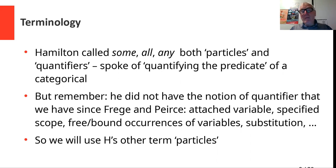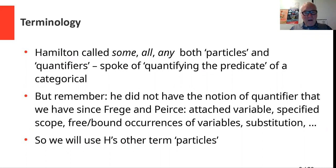Regarding terminology: Hamilton called some, all, and any 'particles,' and he also called them quantifiers. He must have invented the term 'quantifying the predicate' of a categorical proposition. But we have to keep in mind that Hamilton did not have the notion of a quantifier that we have since the work of Frege and Peirce — that is, a sign with an attached variable, with a specified scope, with a distinction between free and bound occurrences of variables, and substitution for terms for the variables. He didn't have that notion at all.